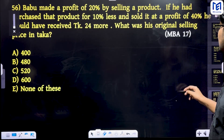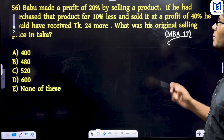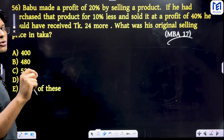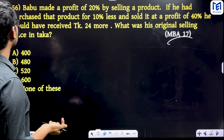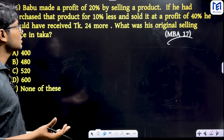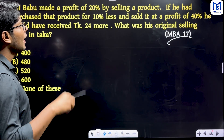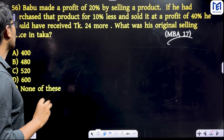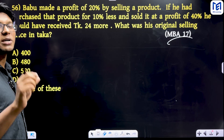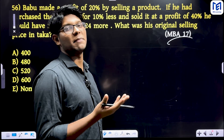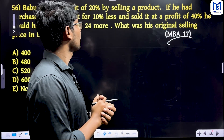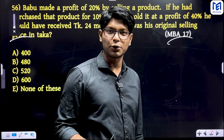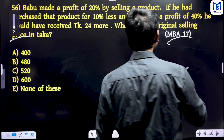This is from MBAT 2016. Babu made a profit of 20 percent by selling a product. If he had purchased that product for 10 percent less and sold it for 40 percent more, he would have received 24 percent more profit. What was his original selling price? It relates to the cost price.